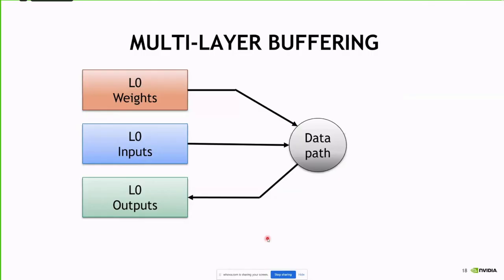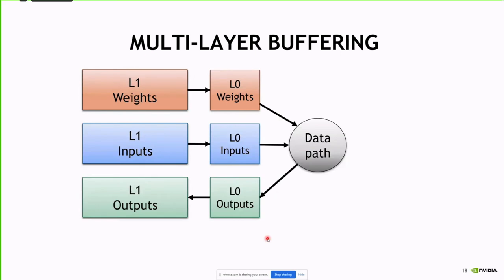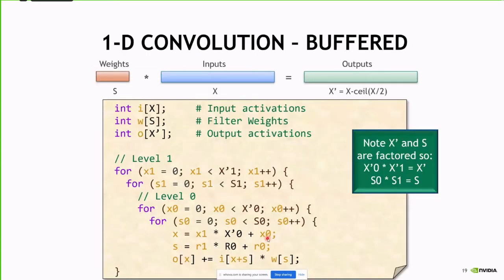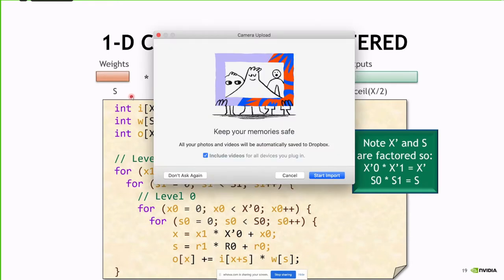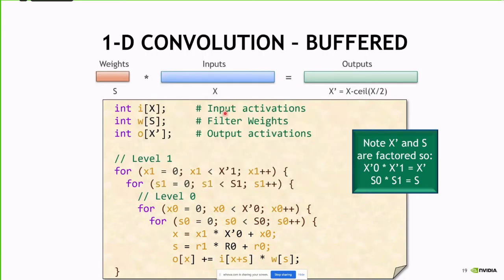Let's get more realistic by adding on-chip buffering that will allow us to minimize our accesses to off-chip. We'll add buffer levels and work toward a true buffer hierarchy. The way to think about adding buffer levels is to think about splitting indices and rearranging loop levels — essentially a form of blocking or tiling. We take X and split it into X1 (the number of passes) and X0 (the tile size).